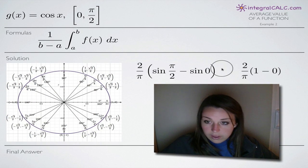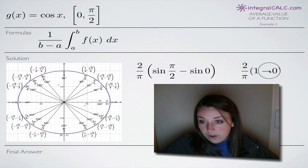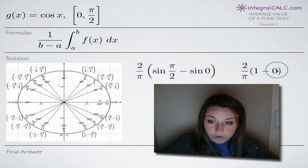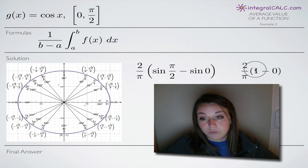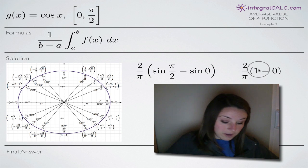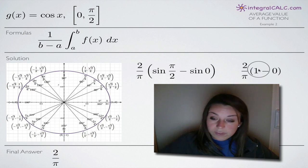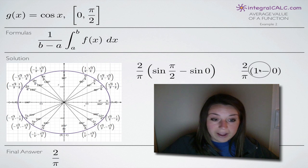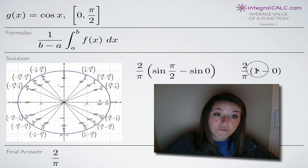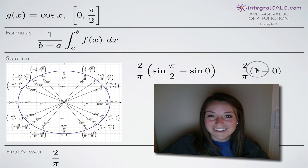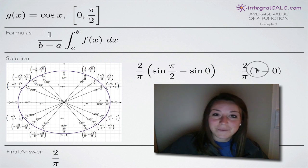Heading back to the function, we have two over pi times one minus zero, which means our final answer is two over pi. So two over pi is the average value of the cosine function over the range zero to pi over two. I hope that helped — I'll see you in the next video!